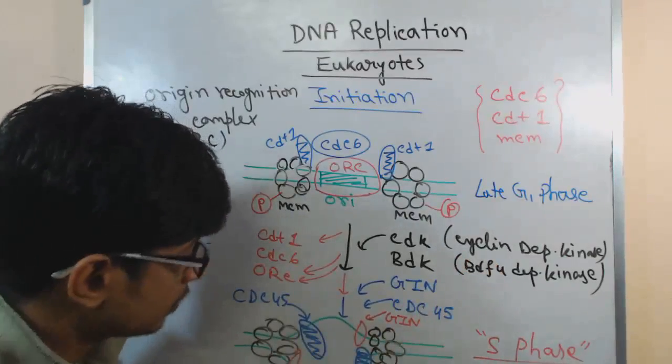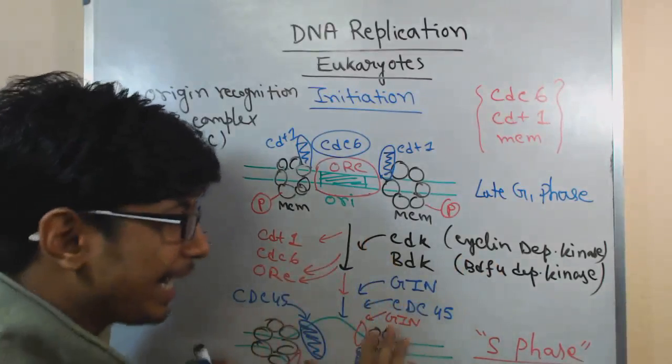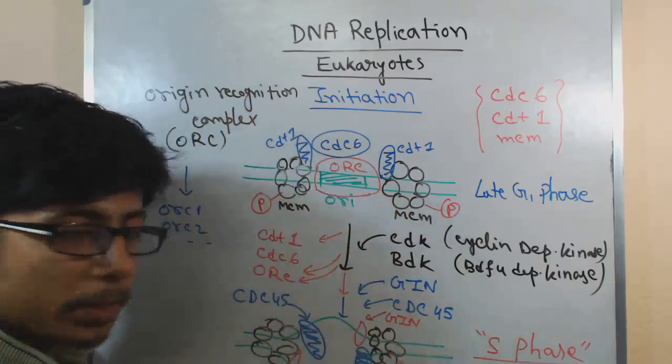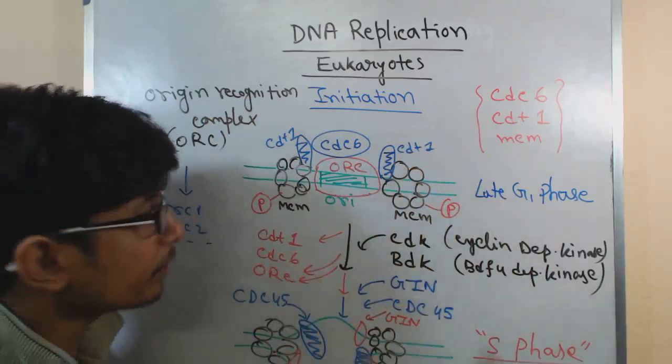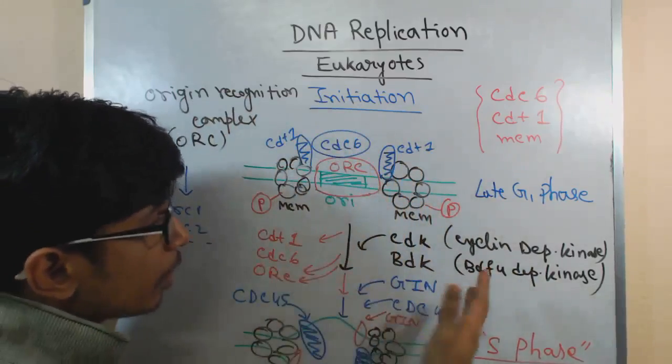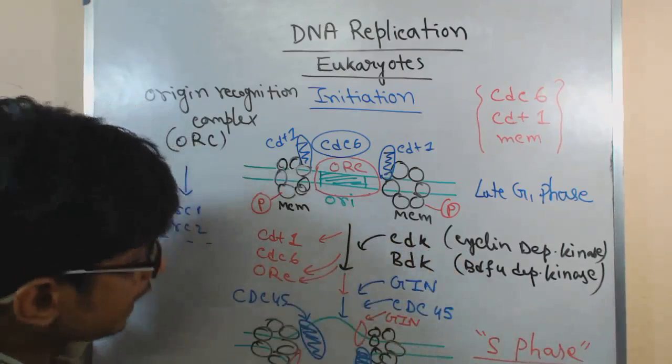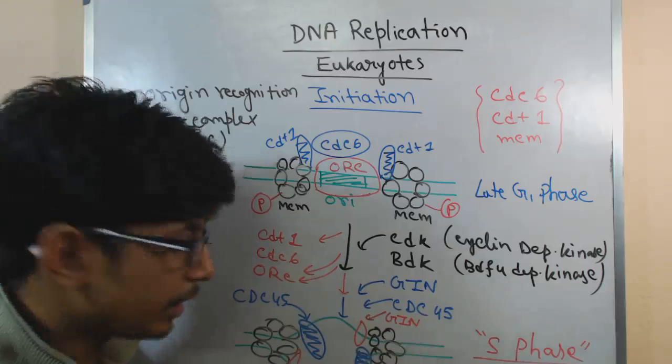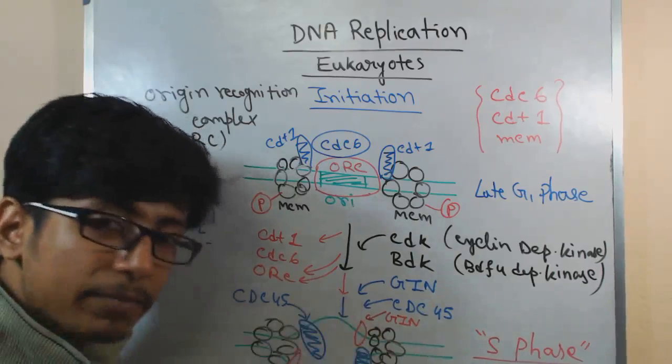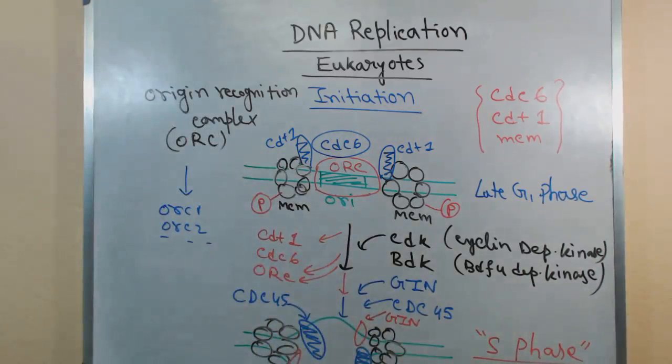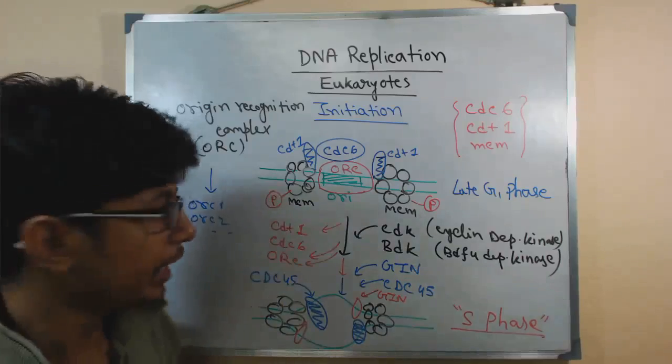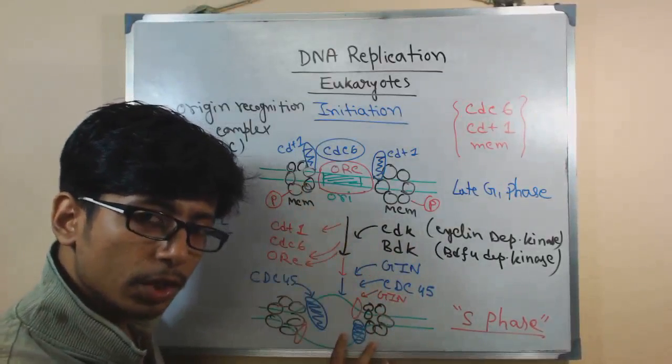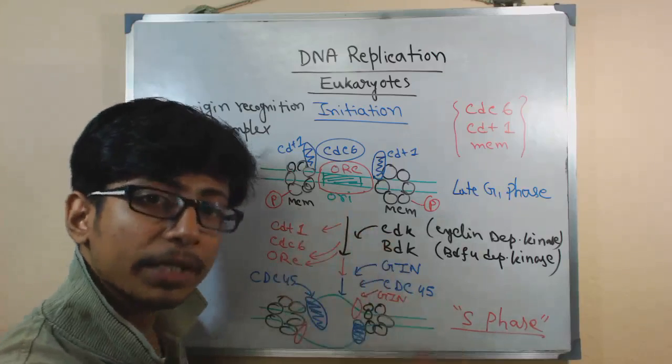This is the ultimate end of the replication initiation in eukaryotes. It starts with detecting the ORI by the ORC - origin recognition complex - then brings CDT, MCM 2 to 7 units, and the CDT and CDC6. Then it is activated and phosphorylated by CDK and BDK, and then it removes this ORC, CDT, and CDC. Now they will bring GIN and CDC45, so ultimately GIN, CDC45, and MCM together start to initiate this process. This is the active complex, the mature initiation complex of eukaryotic DNA replication.